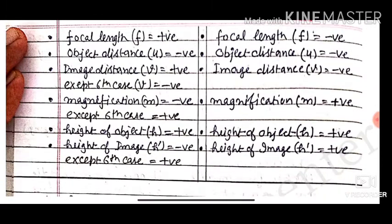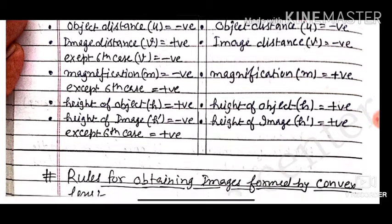Sign conventions: focal length is positive for a convex lens (focus on right-hand side) and negative for a concave lens (focus on left-hand side). Object distance is always negative; image distance is positive except in the sixth case where it is on the left. Magnification is negative for real inverted images and positive for erect images. Height of object is always positive; height of image is negative for inverted images.